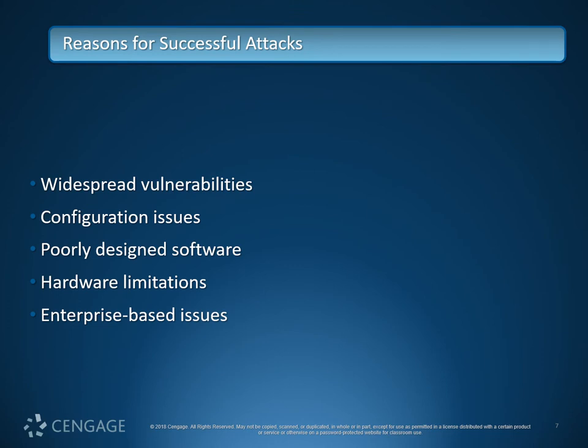Why are these attacks successful? We have widespread vulnerabilities and configuration issues. Software now often relies on open source code due to cost, which means it may not have gone through the same level of quality testing — it's not necessarily poorly designed, just poorly tested in many cases. Poorly designed software does exist, but it's less prevalent than software that simply hasn't been put through rigorous quality assurance.